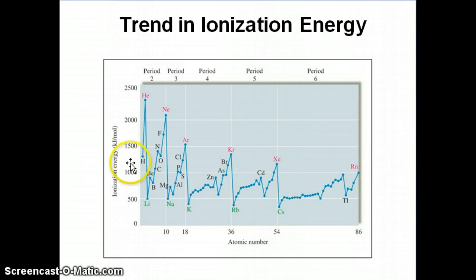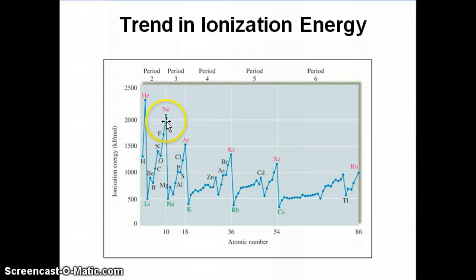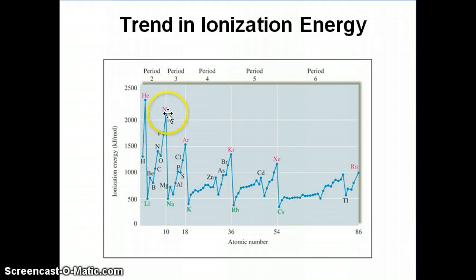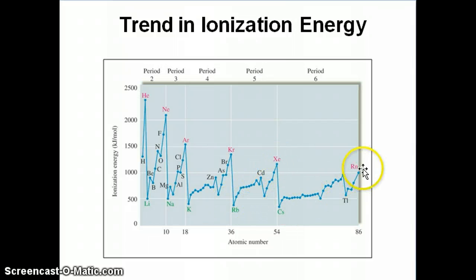What you notice is that generally speaking, as you go from the left of the period to the right, there is an increase in ionization energy — this is your y-axis, the axis for the energy itself. For example, in period 2 there seems to be an increasing trend. The same thing in period 3, period 4, and so on — there's an increase across each period.